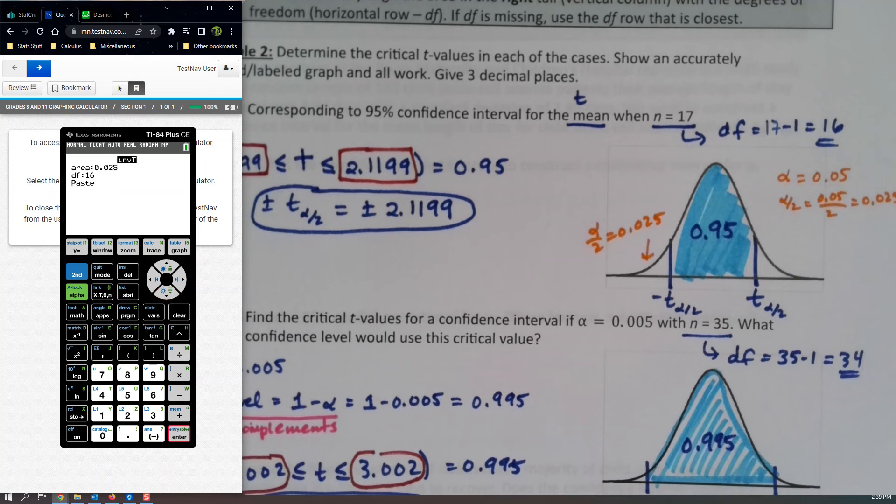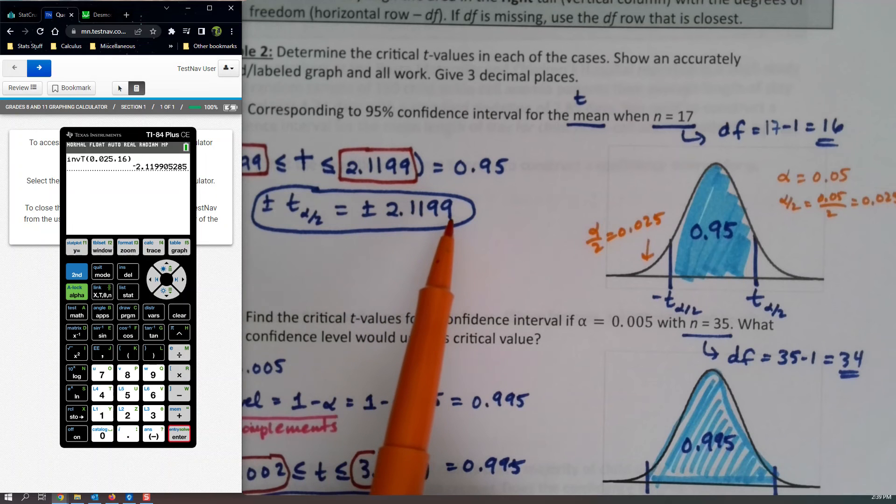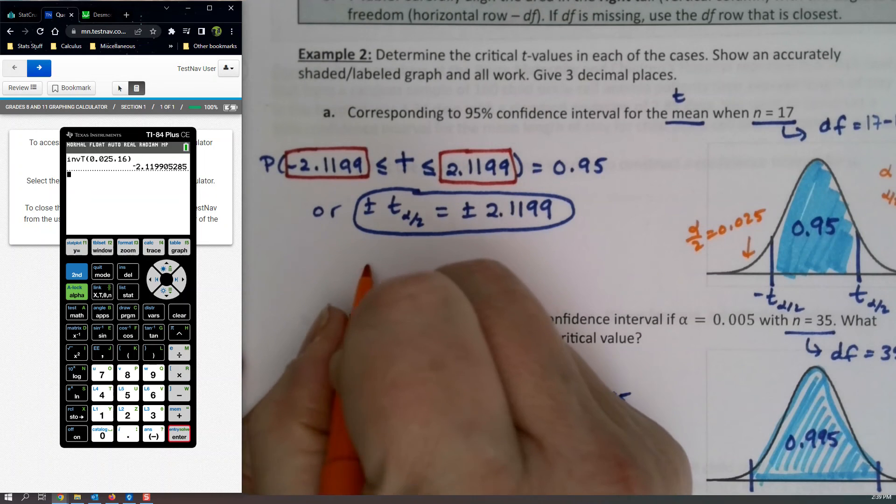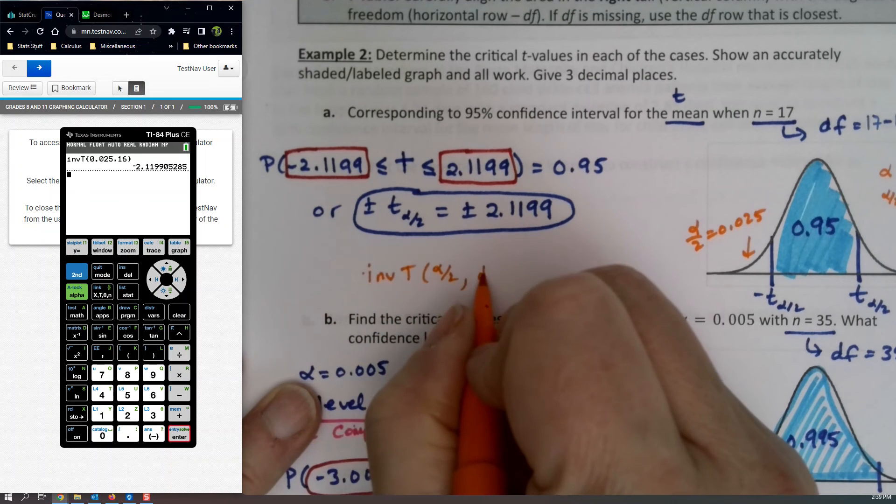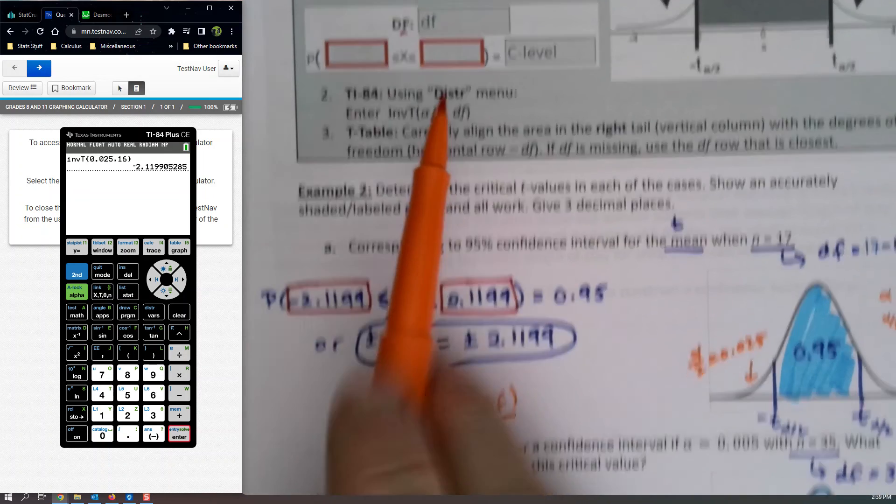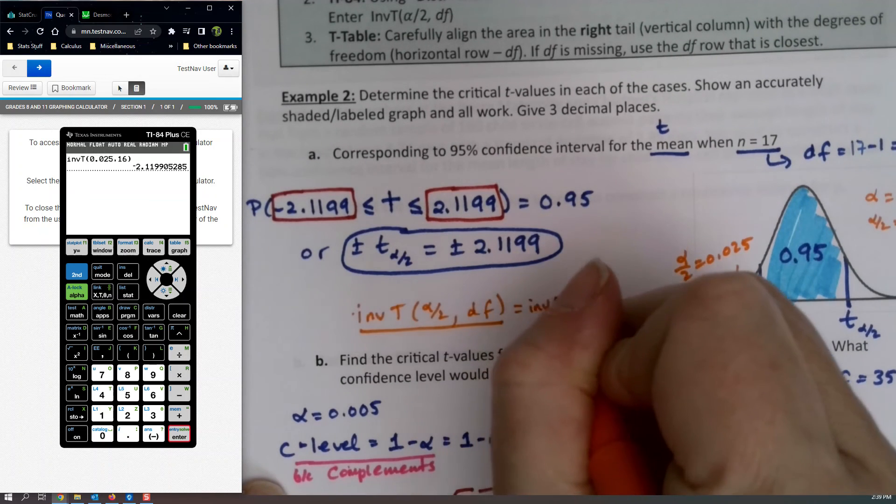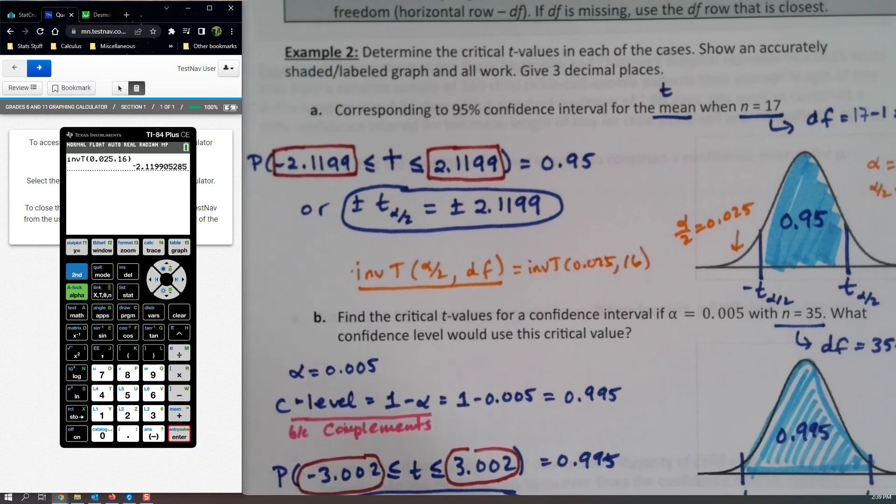We go down to paste, we press enter, we press enter again, and there we have the same value, negative 2.1199. So there you go. So it's in Inverse T, but you'll have to put in alpha over 2 and your degrees of freedom. It's written up above. So in this case, it was Inverse T, .025, 16. There you go. So that's the TI.